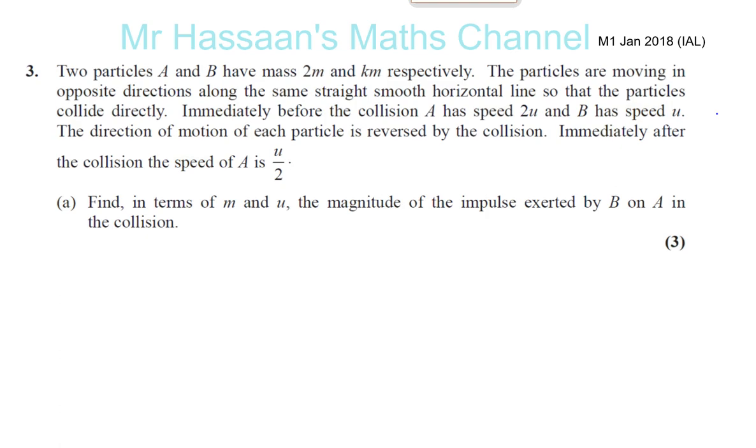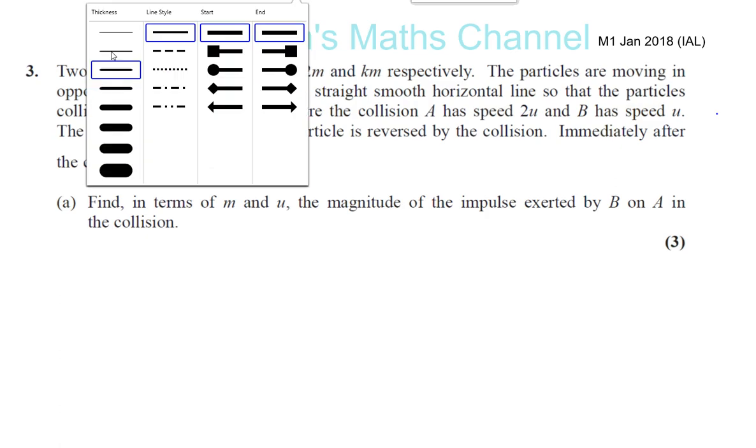Find, in terms of m and u, the magnitude of the impulse exerted by B on A in the collision. So what we've got to do first in this question is, for part A, let's just do a diagram that will help us with the whole question.